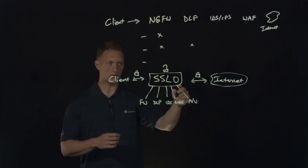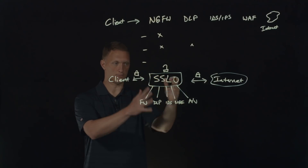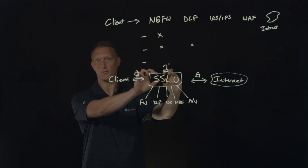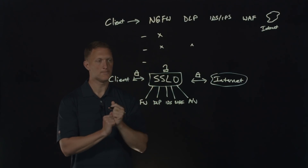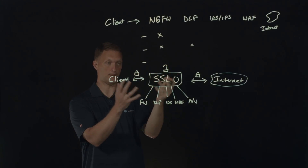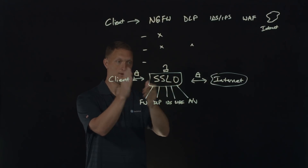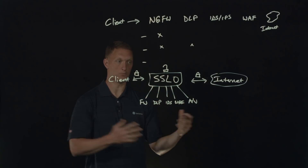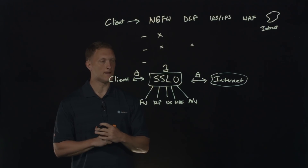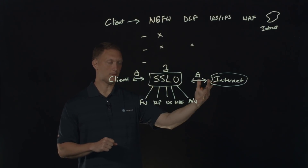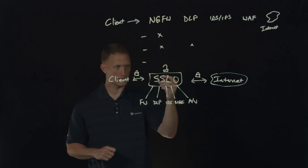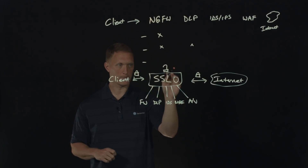You still have all your security devices — a firewall, DLP, IDS, WAF, antivirus — but it's cool because the traffic can go to any one, or all, or however you want. You build the policy on the SSL Orchestrator, and based on the classification of the traffic itself you can send it to one, more, all, none, or whatever you want to do.